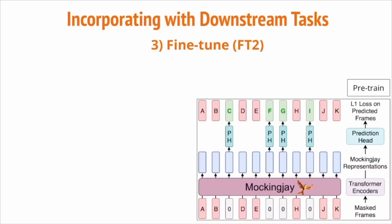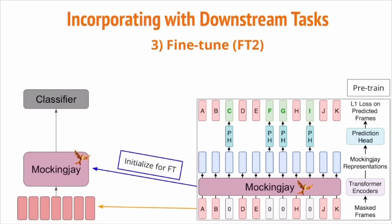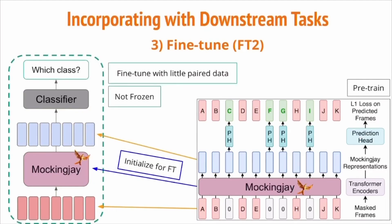The third case is where we fine-tune the Mockingjay model with downstream classifiers. Same as the previous two cases, we have a pre-trained Mockingjay model. In the fine-tuning case, the downstream model consists of Mockingjay followed by a classifier, where we initialize the Mockingjay model with the pre-trained weights. The loss is applied on both the classifier and the Mockingjay model, and the Mockingjay model is no longer frozen and updates with the classifier. When we fine-tune with little data, we fine-tune for two epochs only, and we denote this setting as FT2 in later experiments.